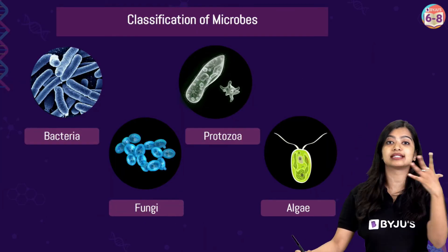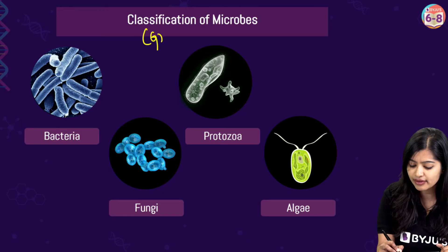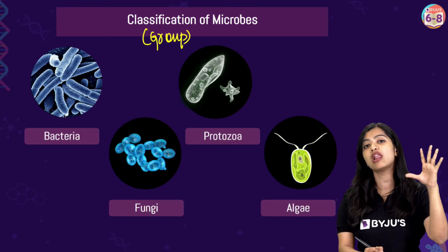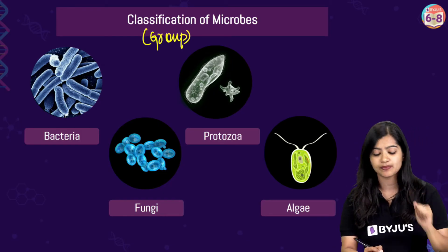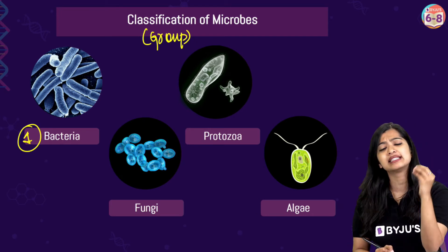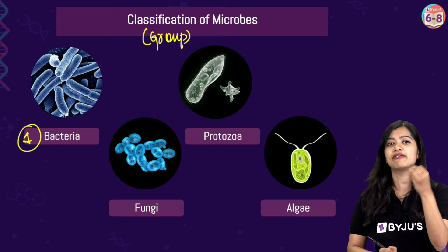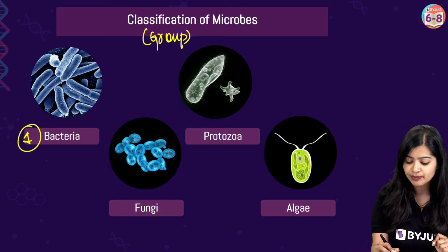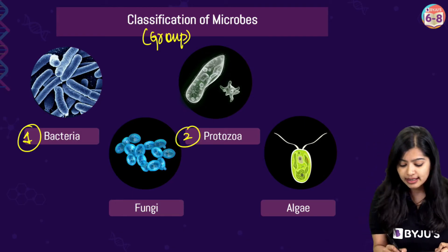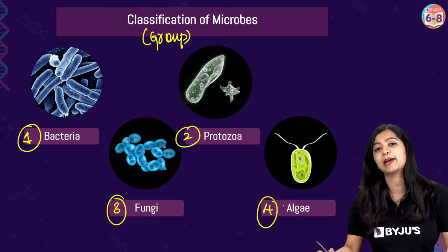Broadly, we can classify or group these microorganisms into four large categories. We have bacteria, which are very simple and primitive organisms. Then we have protozoans. Then we have fungi, and we have algae.